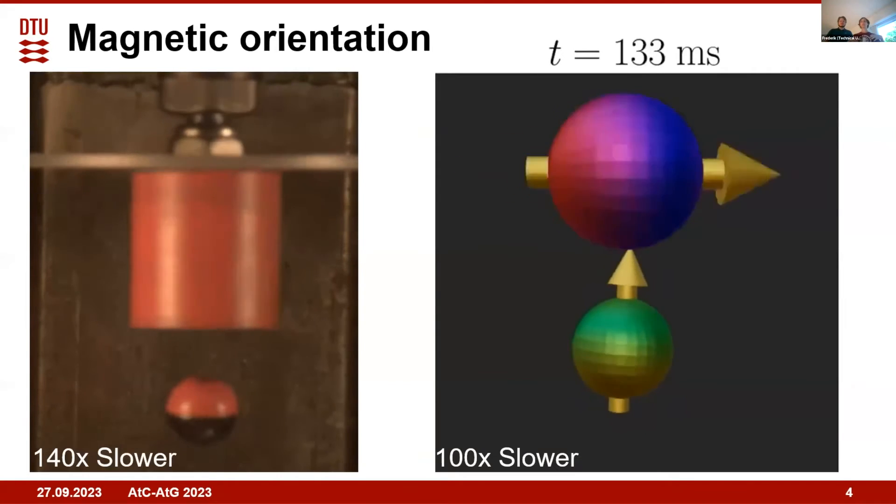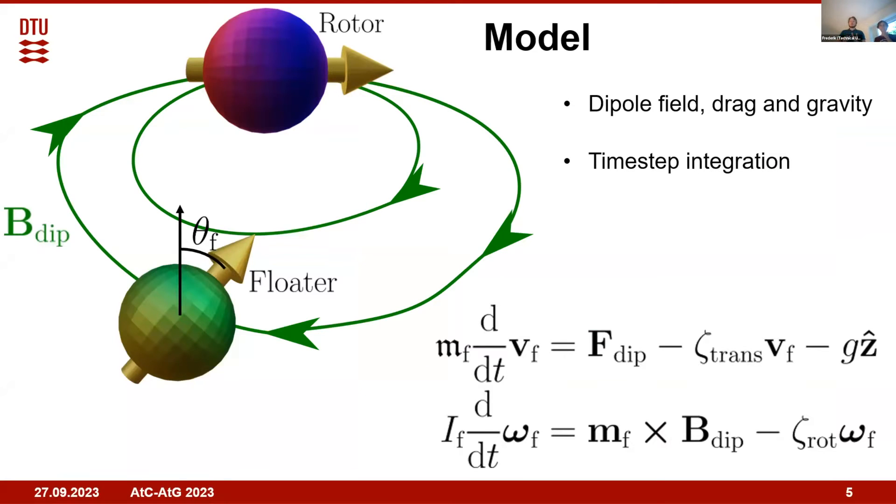Now for the modeling. We will try to explain why this phenomenon occurs, why this levitating state of this exotic moment configuration is stable. In our model we have a dipole magnetic field from the rotor acting on the floater. We have drag which we model as proportional to the linear and angular velocity, and we have gravity. Because the dipole field decreases with distance, it has a gradient, so it produces both a force and a torque that tries to align the floater moment with the dipole field. Putting these into Newton's second law for translation and rotation, we get these equations that we can time-step integrate to get the full time evolution.